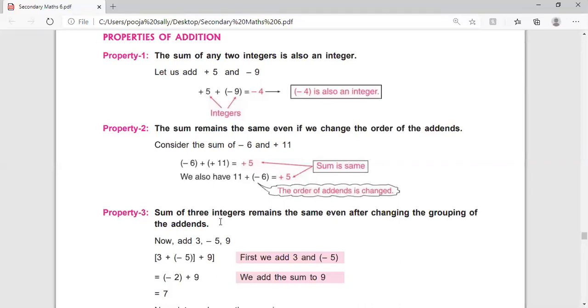Property 3 is sum of three integers remains the same even after changing the grouping of the addends. Similarly, if there are three integers and we change the grouping or the order, even then we get the same answer.